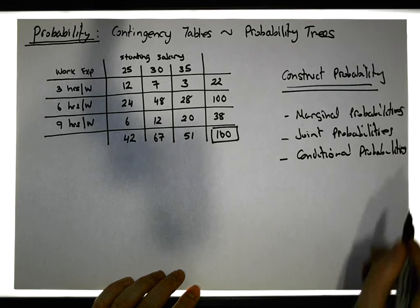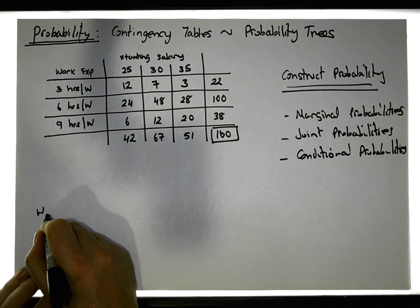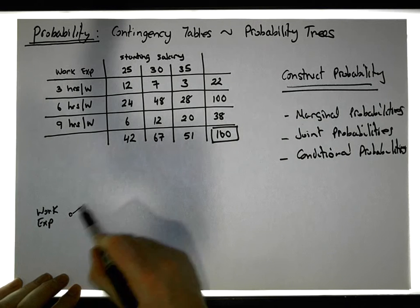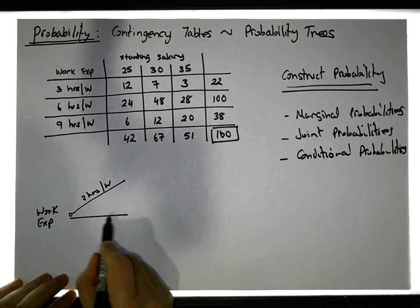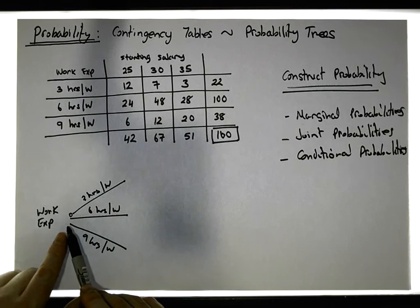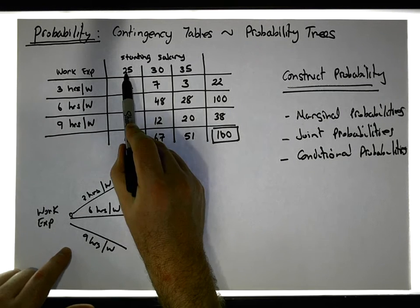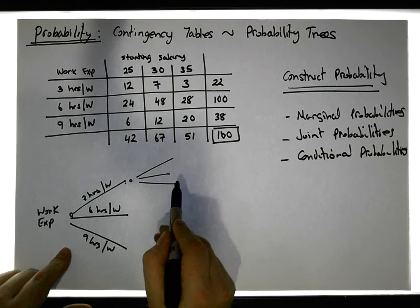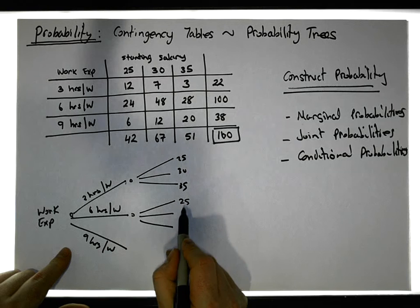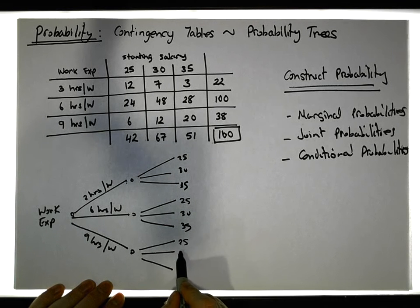The first question is: what's the root of the tree? There are two approaches. We can take work experience as the root. There are three levels for work experience, so if work experience is the root, we have three possibilities: three hours of work, six hours of work, or nine hours of work. For each of these branches, people who do three hours could be on 25, 30, or 35,000 euros. Similarly for six hours and nine hours — each can correspond to one of three salaries: 25, 30, or 35,000 euros.